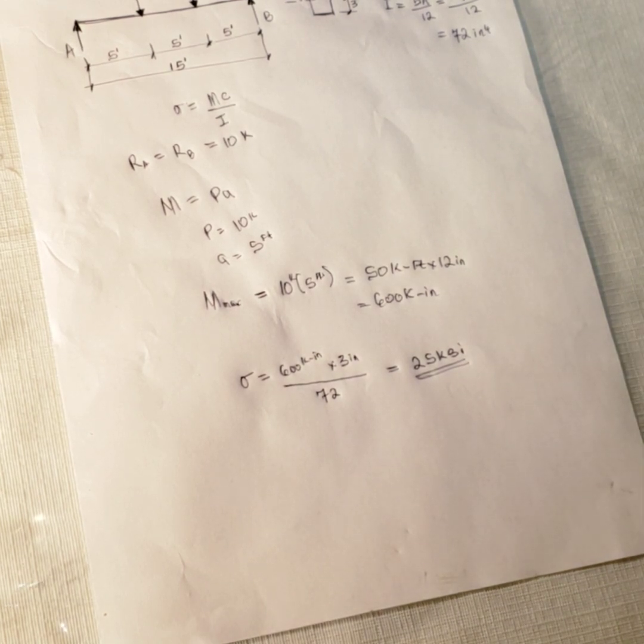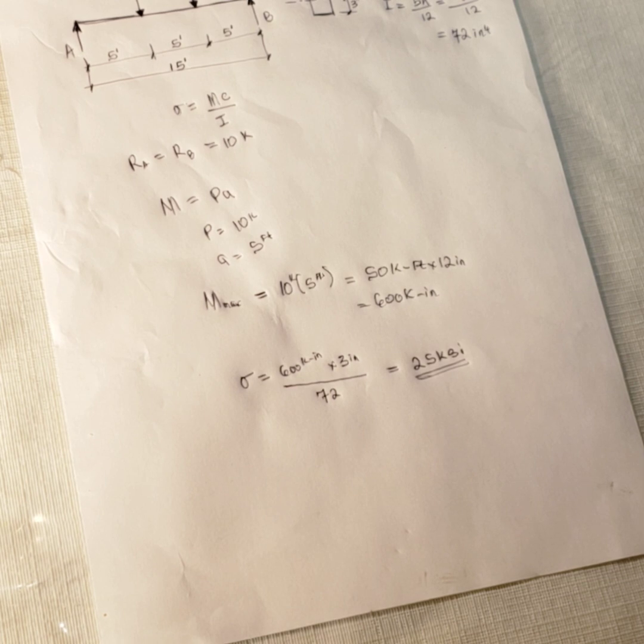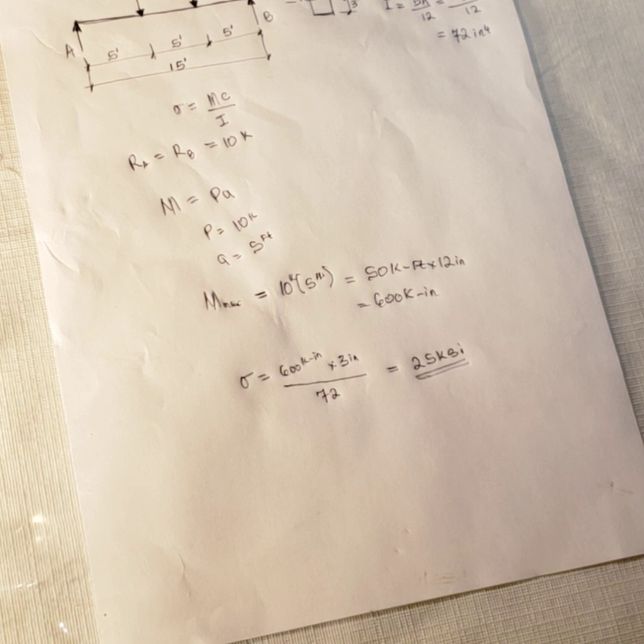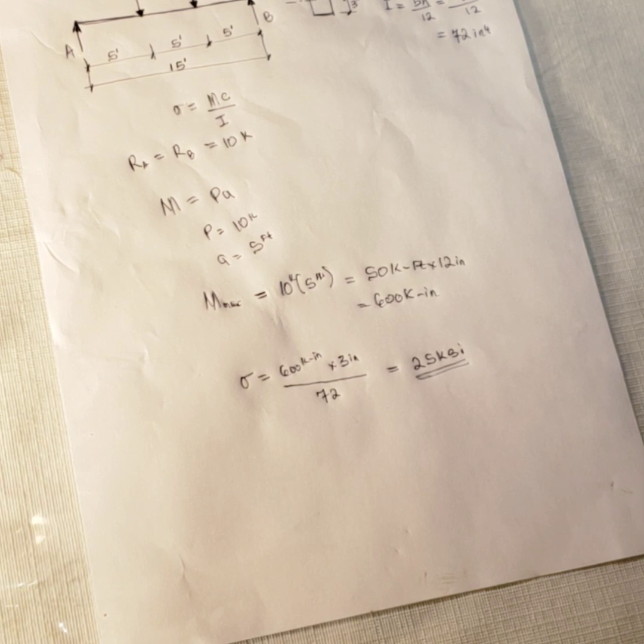Just make sure you check for your unit. Make sure your moment of inertia is correct, your centroid is correct, your moment is correct. You can solve for the moment too in a different way. If you follow the long method, which is solving for the reaction, solving for the shear diagram, using the shear diagram and then the moment diagram. And then with that, you can arrive at your maximum moment. If you do that, you are still going to arrive at the same 50 kip feet.